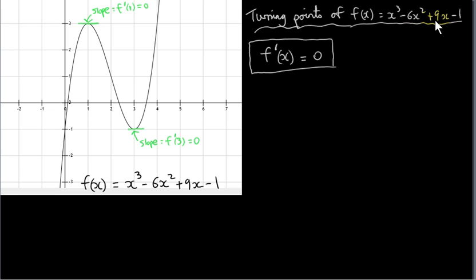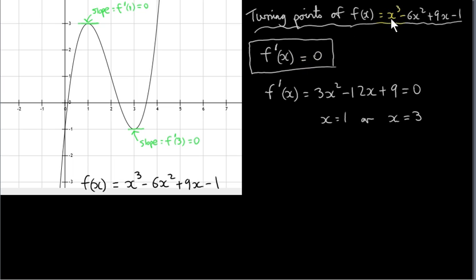Not all cubic functions have turning points — some cubic functions do not have turning points. To find the turning points, we differentiate this function and get 3x squared minus 12x plus 9, then set the derivative equal to 0. We solve this quadratic equation by factorizing or using the formula, and the solutions are x equals 1 or x equals 3. So this equation does have solutions, meaning we do have turning points.